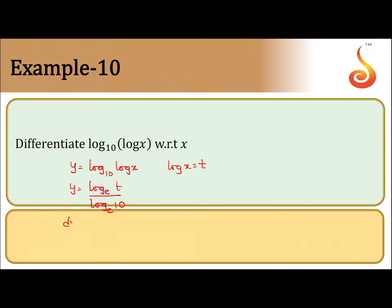Now dy by dt is equal to 1 by t into log base e 10 as a constant. Just recall d by dx of log base e x equal to 1 by x.